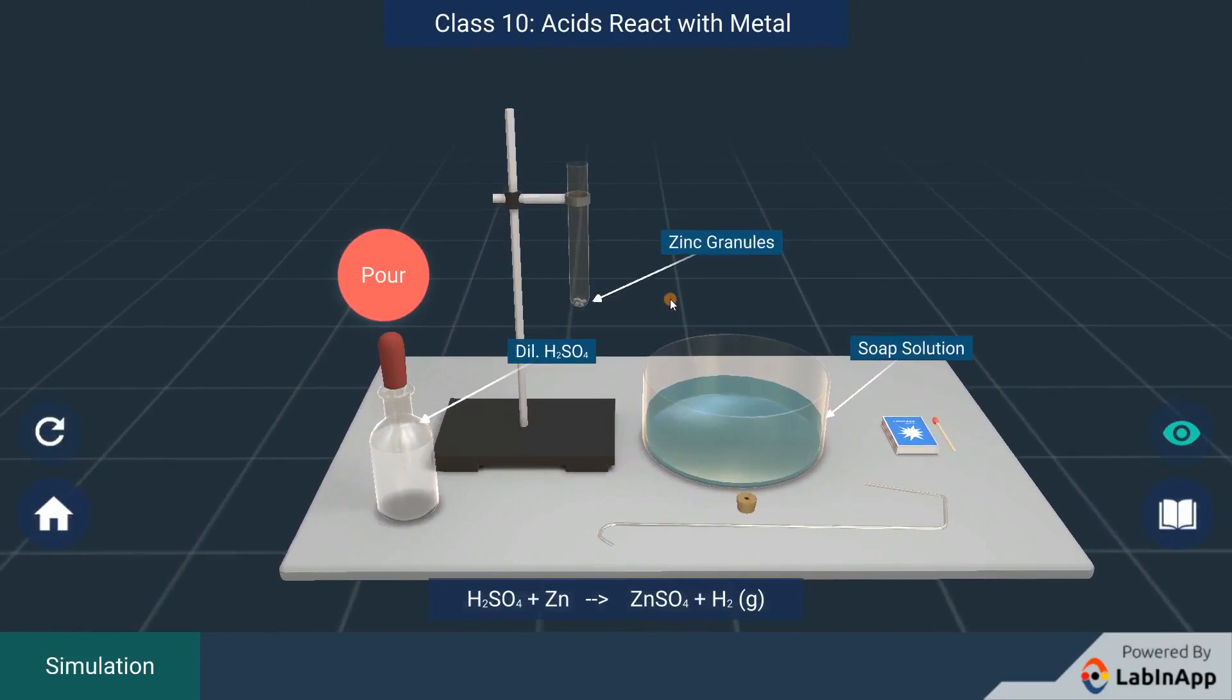Add dilute sulfuric acid to a test tube containing zinc granules and observe.